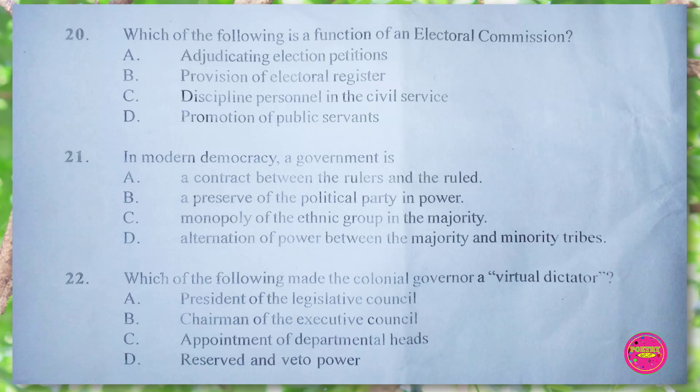Question 21. In modern democracy, a government is: A. a contract between the rulers and the ruled, B. a preserve of the political party in power, C. monopoly of the ethnic group in the majority, D. alternation of power between the majority and minority tribes. The correct answer is A. a contract between the rulers and the ruled.